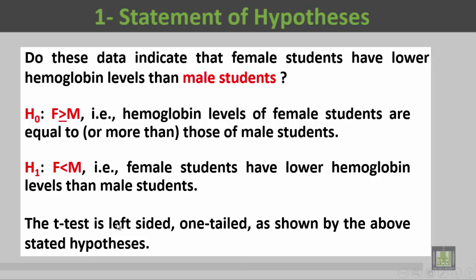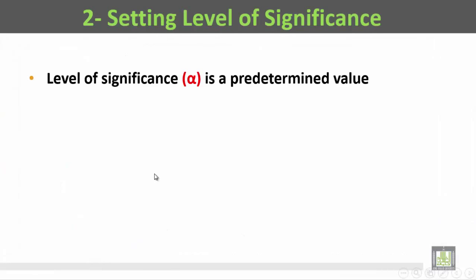Let us notice that the t-test in this example is left-sided one-tailed, as shown by the above stated hypothesis. If we look at this sign, its angle is pointing to the left, so this test is left-sided one-tailed. If it were pointing to the right, it would be right-sided one-tailed. So this is left-sided one-tailed.